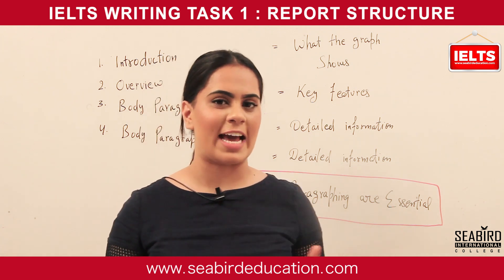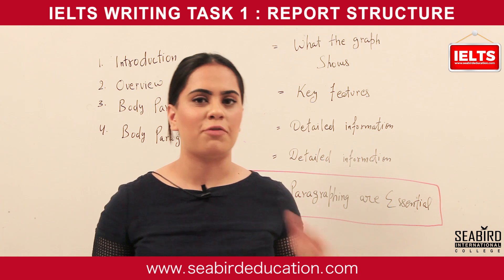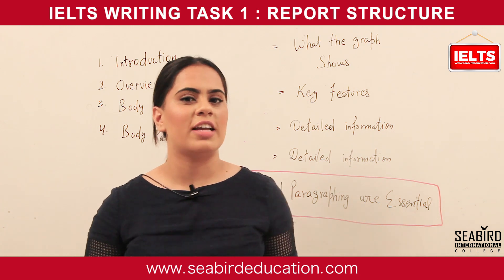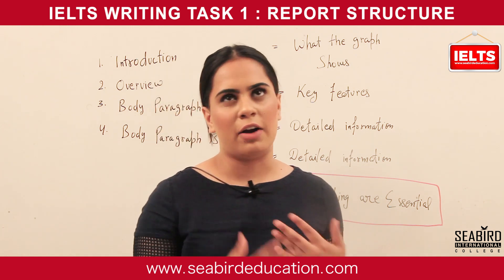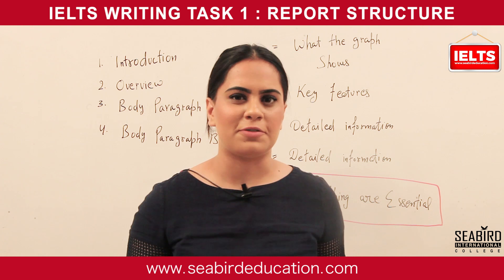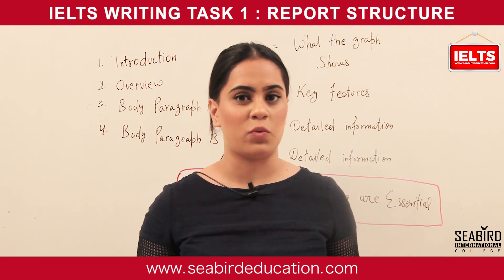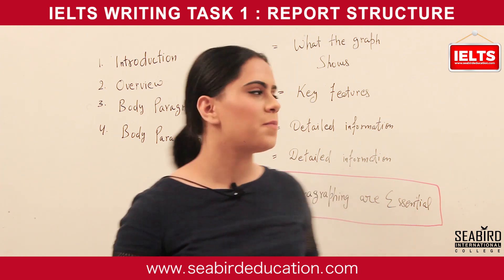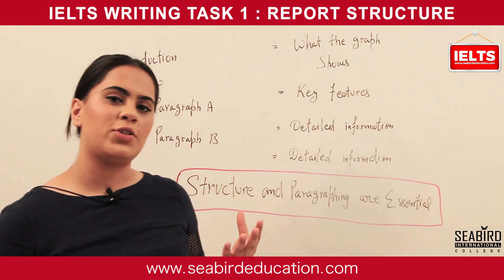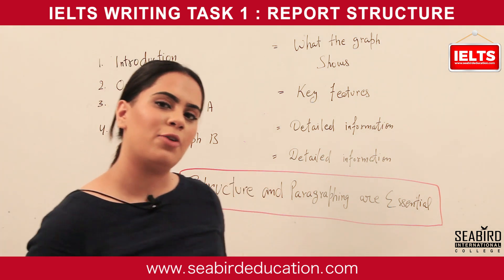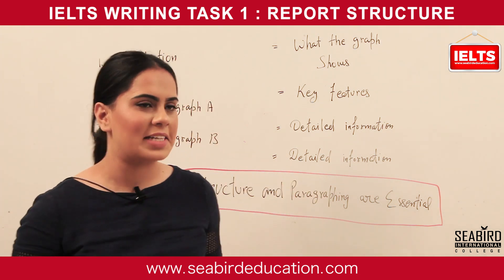Usually for task 1, IELTS gives you a graph or a pie chart and you have to describe it and write around 150 to 180 words for your task 1 describing the bar chart. Now, I'm going to tell you how to write task 1 or how to go about it.